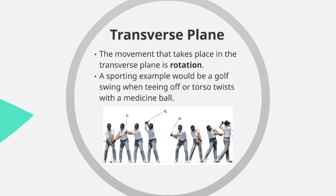Within the transverse plane, the movement that takes place is mainly rotation. A sporting example would be a golf swing when teeing off, or torso twists with a medicine ball. Looking at the diagram, as the golfer pulls back his club he is twisting or rotating in one direction, and then as he starts to strike the ball he rotates in the opposite direction. So rotation takes place within the transverse plane.